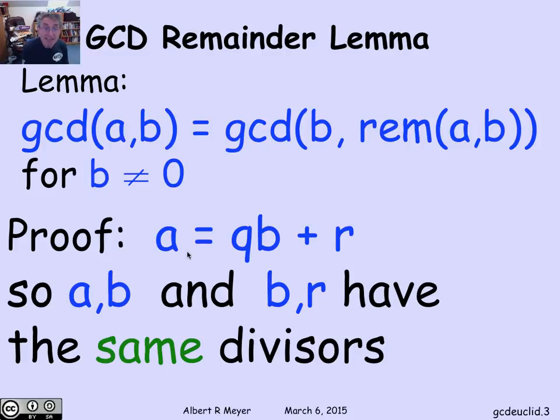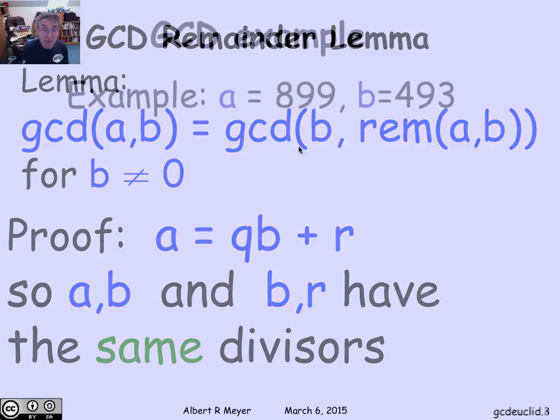That means that a and b and b and r have exactly the same divisors. They not only have the same greatest common divisor, all their divisors are the same. Obviously, the greatest one is the same. And that proves this key remainder lemma.